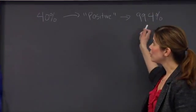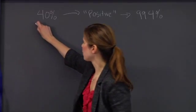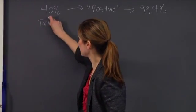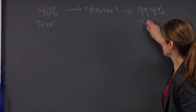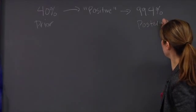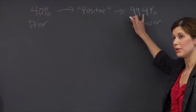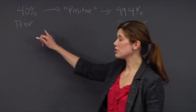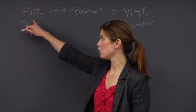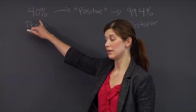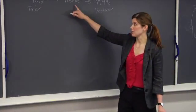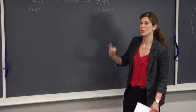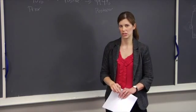So again, we use Bayes' rule to update our prior probability, which is 40%, to a posterior probability of over 99.4%. So this is in contrast to the United States where we only had a 1% chance of HIV prevalence and observed a positive test result. Those patients only have a 72% chance of actually having HIV.